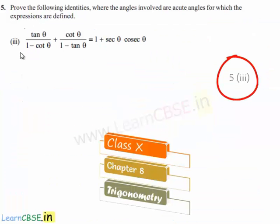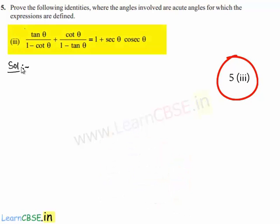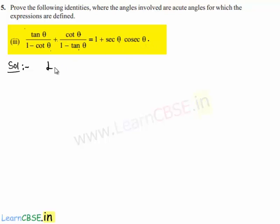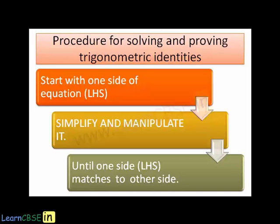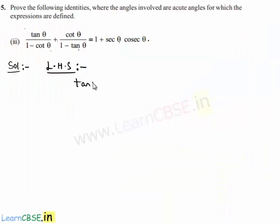Moving on to the third bit of the fifth problem, let us find the solution. Here the given equation is tan theta by 1 minus cot theta, plus cot theta by 1 minus tan theta, is equal to 1 plus secant theta into cosecant theta. Now in order to prove this, let us consider the left hand side: tan theta by 1 minus cot theta plus cot theta by 1 minus tan theta.